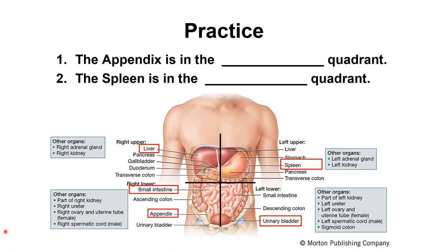Let's apply what we've learned. The appendix is in the blank quadrant. The appendix hangs off the large intestine down here — that would be your right lower quadrant. The spleen is in the blank quadrant. The spleen is hiding right behind the stomach up here — since the appendix was in the right lower, the spleen must be in the left upper quadrant.